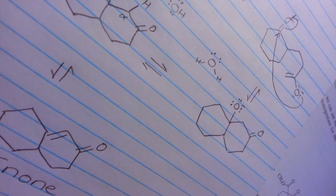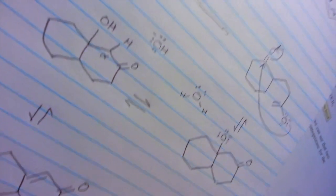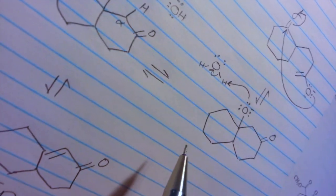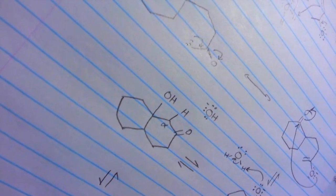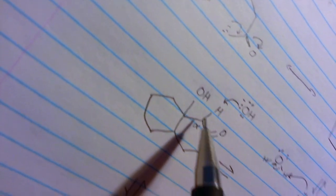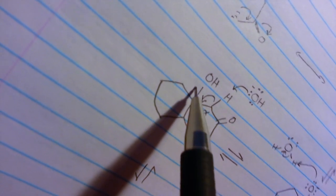There's just a few more steps people, that ain't all. Base now removes the alpha proton, favoring an E2 elimination. OH leaves and we get an enone, that's the final product of an annulation. Now that we are done with this mechanism, bring out what's next in the organic chem nation, yeah.